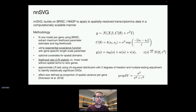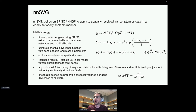The methodology works as follows: we fit one model per gene using BRISC, extracting the maximum likelihood parameter estimates, then using a likelihood ratio test to compare the model with and without spatial terms, and using those likelihood ratio statistics to rank genes by the strength of their spatial patterns across the tissue slide. This lets us do unsupervised analysis where we can simply rank all genes in the dataset by the strength of their spatial patterns.